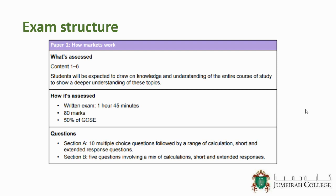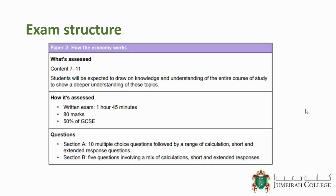You'll have two sections. Section A with 10 multiple choice questions, followed by a range of calculations, short and extended response questions. Section B, you'll have five questions which will be a mix of calculations, short and extended responses. The other 50% of your GCSE will be macroeconomics. The exam will also be one hour 45 minutes with two sections. Section A with MCQs and some short extended response questions. Section B, five questions with a mix of calculations, short and extended responses.